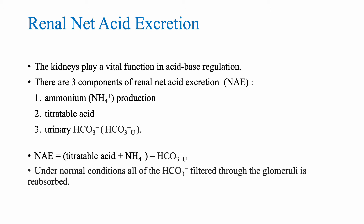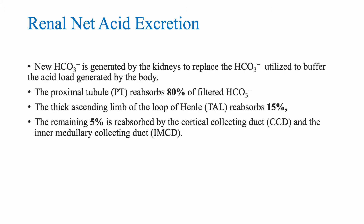Under normal conditions, all of the bicarbonate filtered through the glomeruli is reabsorbed. Unless you have a problem like proximal tubular acidosis, you should reabsorb all of the filtered bicarbonate. New bicarbonate is generated by the kidneys to replace the bicarbonate that is utilized as a buffer. The proximal tubule reabsorbs 80% of filtered bicarbonate, the thick ascending limb absorbs another 15%, and the remainder 5% is reabsorbed by the cortical and inner medullary collecting duct. In summary, all of the filtered bicarbonate should be reabsorbed.